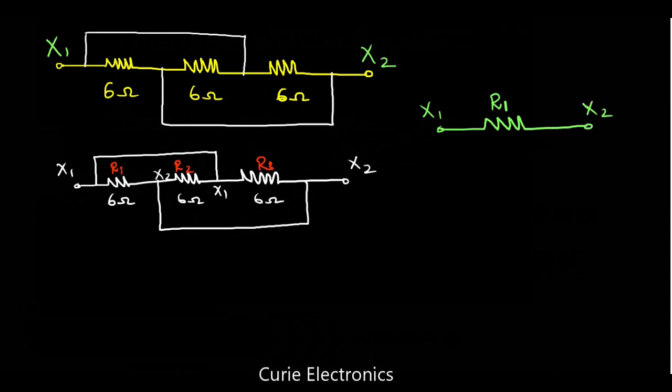Next, what about R2? R2 is also connected between, see, R2, this is the R2 resistor. This is connected between X2 and X1. So, R2 is connected between X1 and X2.